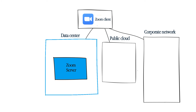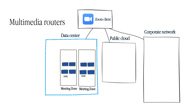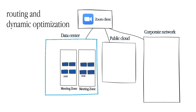The data centers are the major places where the Zoom servers are. The servers are organized into meeting zones. Inside each zone, there are multimedia routers, which are responsible for routing and dynamic optimization of stream traffic.